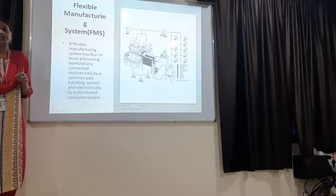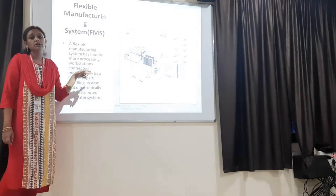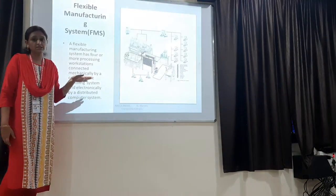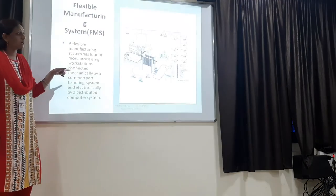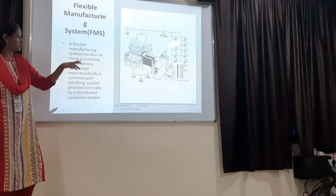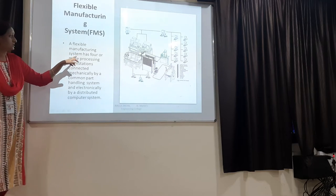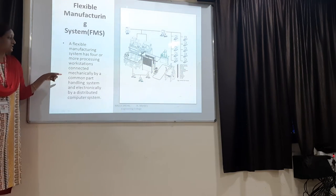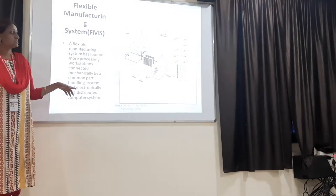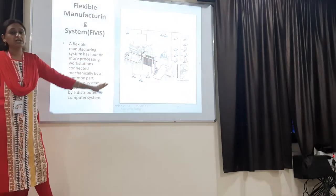The third type is the flexible manufacturing system. If a system has four or more workstations at one place, controlled by a computer, it is known as a flexible manufacturing system. A flexible manufacturing system has four or more processing workstations connected mechanically by a common part handling system and electronically by a distributed computer system.